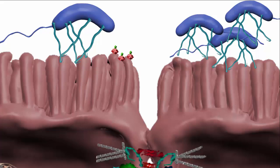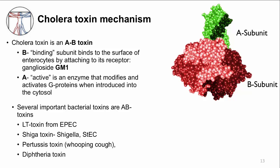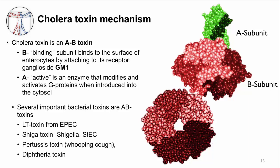Cholera toxin has to get into the cell to work. First, it binds to receptors on the cell surface to enter, much like a virus. Cholera toxin is made of two subunits, A and B, making it an example of an AB toxin. The B subunit — B for binding — binds to the cell, giving it specificity for which cells it can enter. The receptor for cholera toxin is GM1, a ganglioside. The B subunit organizes into a ring structure with a hole in the middle. The A subunit is an enzyme that activates G protein — A for active. Other important AB toxins include LT toxin from ETEC, Shiga toxin, pertussis toxin, and diphtheria toxin.